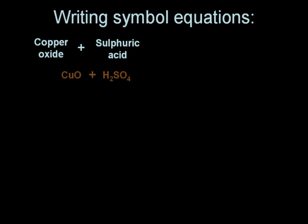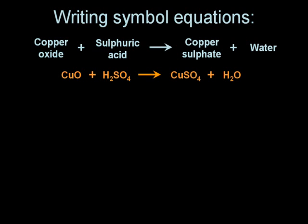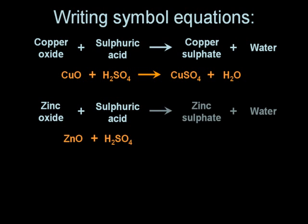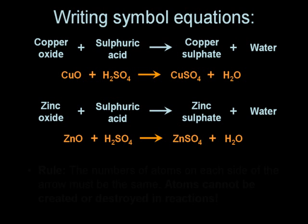When we write simple equations we use the formulae as shown on the screen. In the case of copper oxide and sulphuric acid forming copper sulphate and water, the symbol equation is given in orange. Similarly, in the case of zinc oxide and sulphuric acid forming zinc sulphate and water, the symbol equation is again shown in orange.